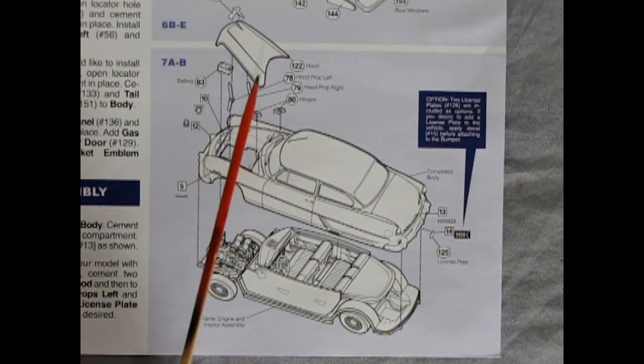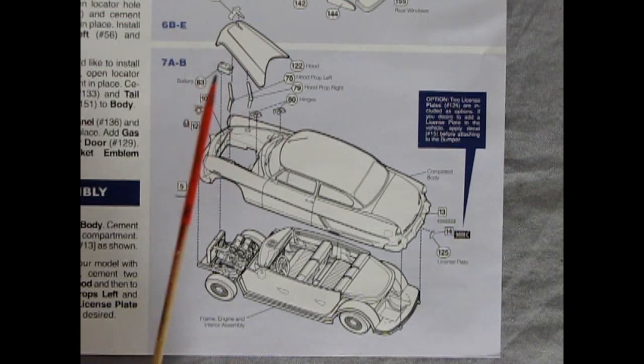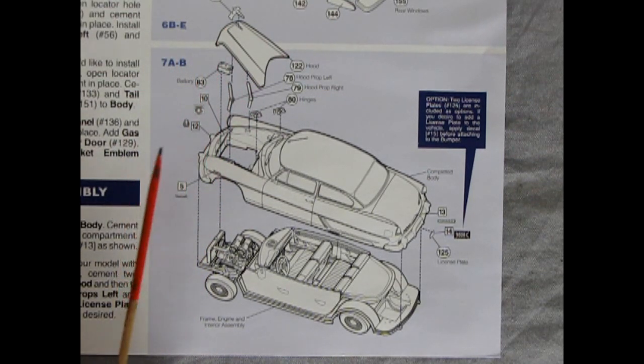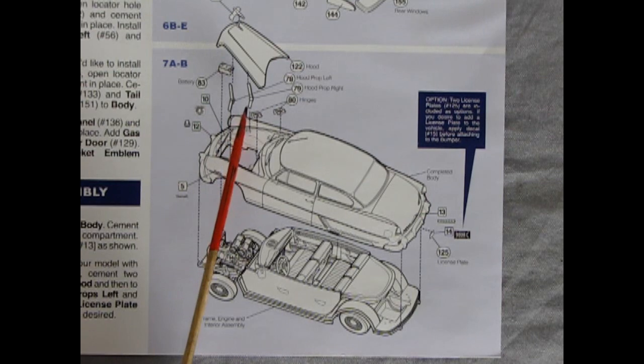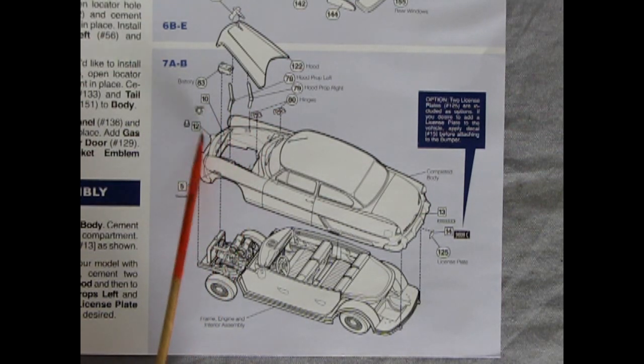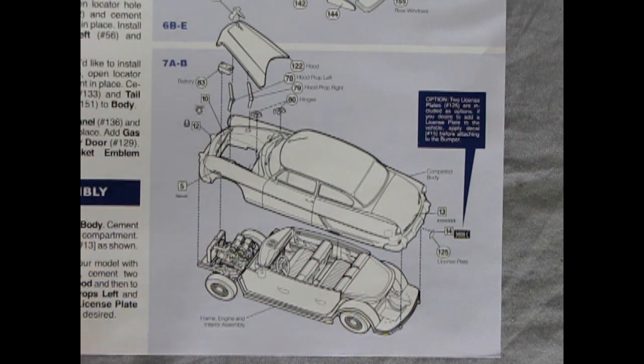Panel seven shows our final assembly with our hood and hood emblem being glued together. We have a battery that drops in. There's our hood hinges as well as a lot of decals which go up in here and then our entire body drops down onto that cool interior and chassis and then we get a license plate for the back.